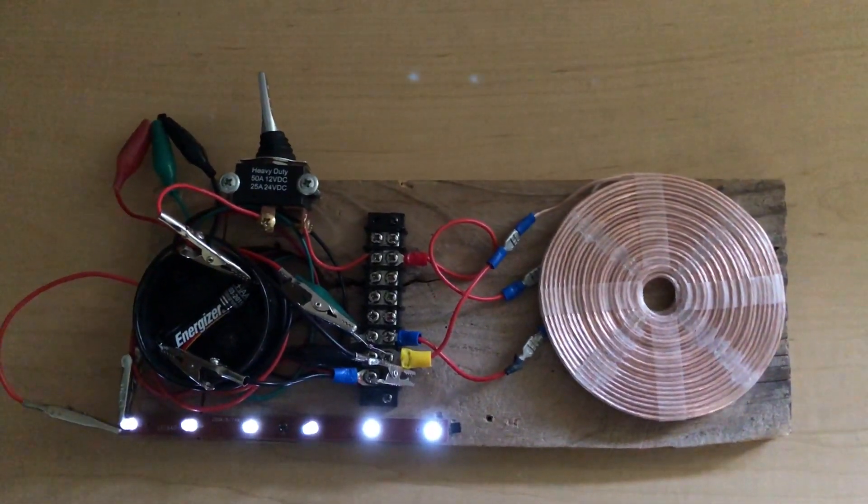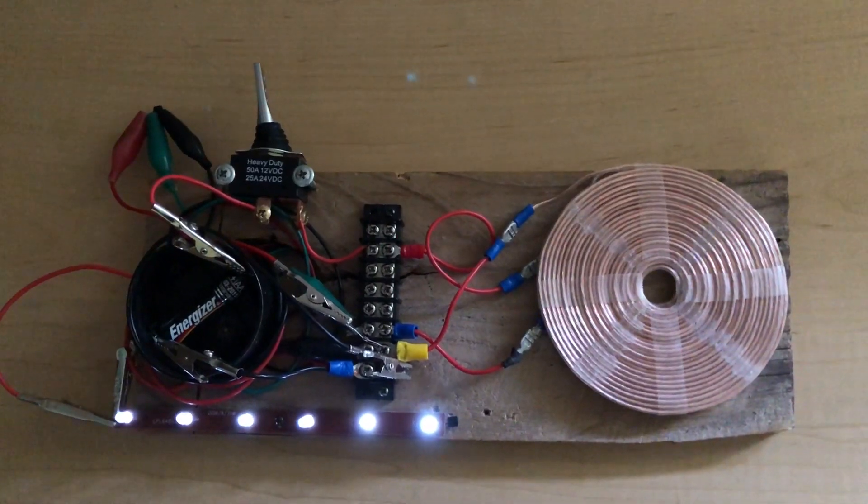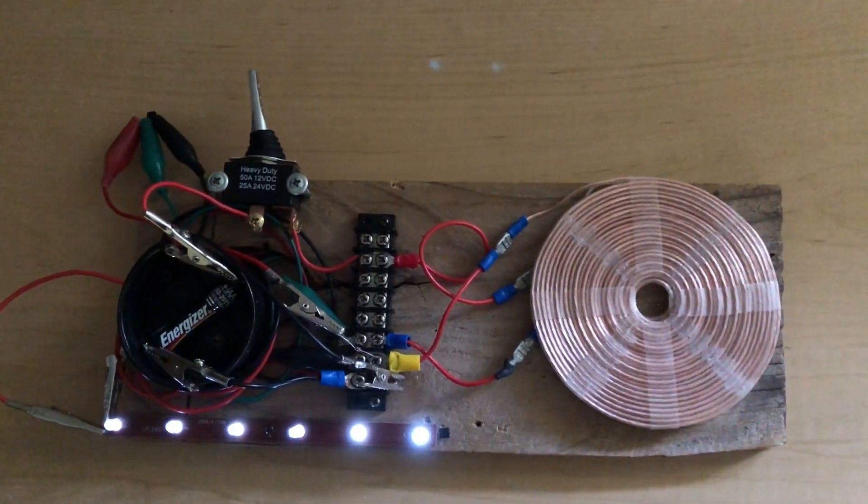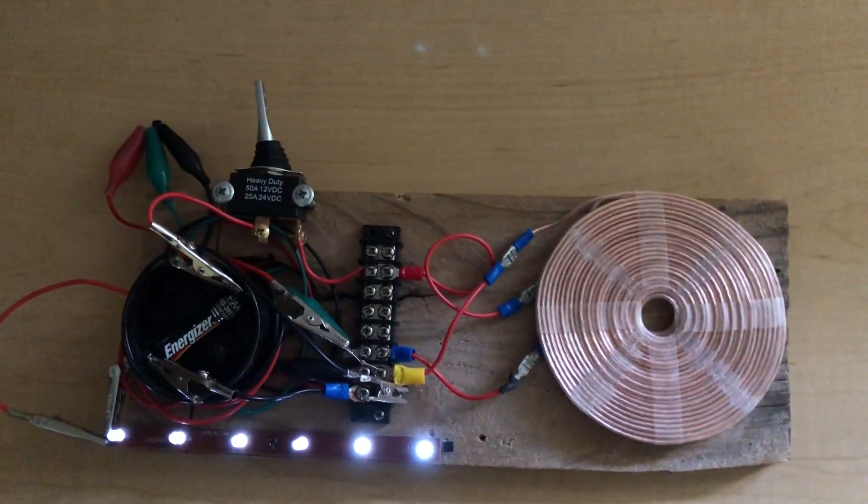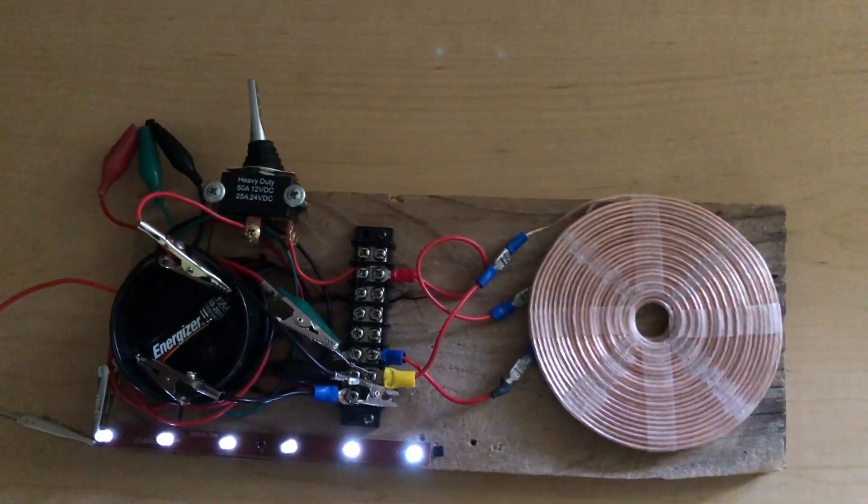But what makes this extra interesting is that not only is the bifiler pancake acting as a toroid, but it's also acting as a wireless transmitter of energy.